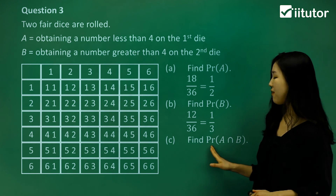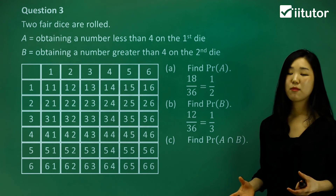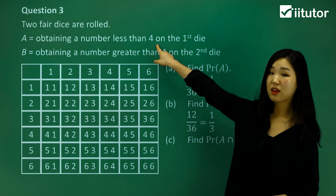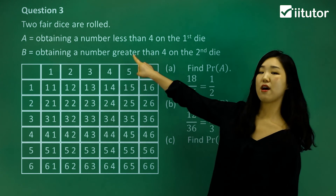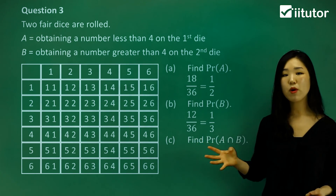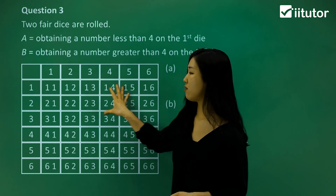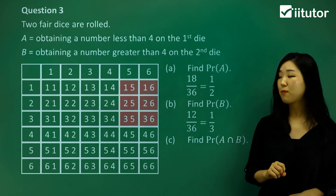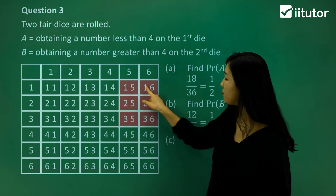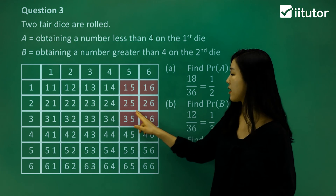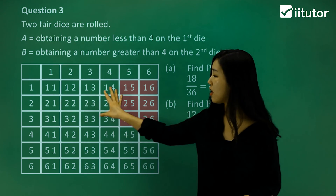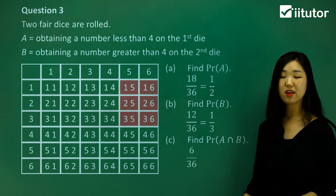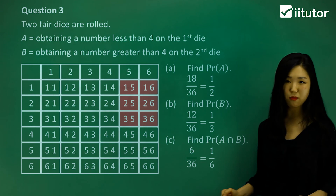Now find the probability of A and B — the common overlapping part. We want the first die less than four AND the second die greater than four simultaneously. Highlighting both regions on the table, the overlapping part consists of six outcomes where the first die is less than four and the second die is greater than four. So it's six out of 36, which gives one over six as the simplified probability.